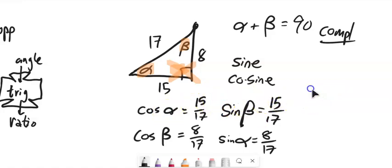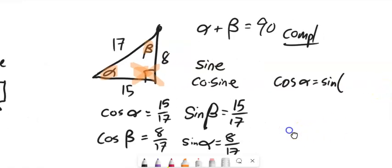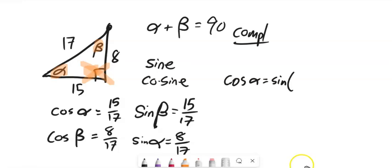That gives us some good relationships. Cosine of some angle is the same as sine of 90 or π/2 minus that angle. Similarly, sine has the same relationship back to cosine.